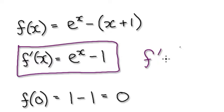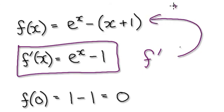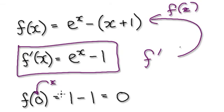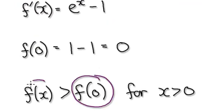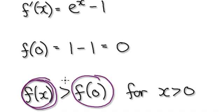Since f prime must always be positive, it implies that the original f of x must always be climbing. If it's always climbing, then any x bigger than zero must always be bigger than the previous value. So any x just to the right of zero must be bigger than f of zero.